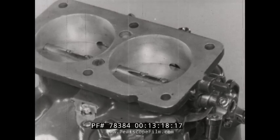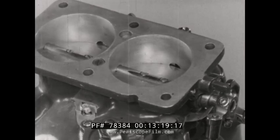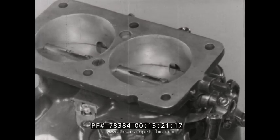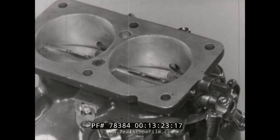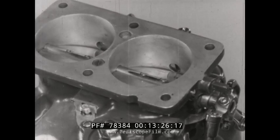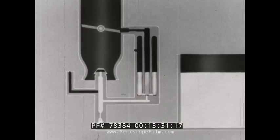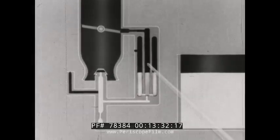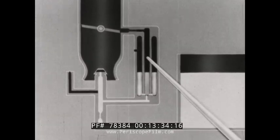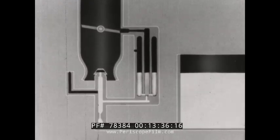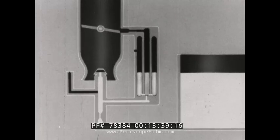With the throttle closed or almost closed, suction on the main discharge nozzle is too low for satisfactory fuel supply. Another device for idling speeds is therefore needed. This direct passage becomes effective when suction in the main metering jet is low, as a result of the small movement of air through the venturi.